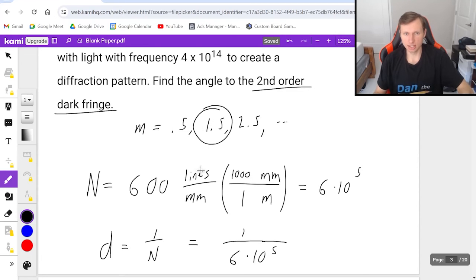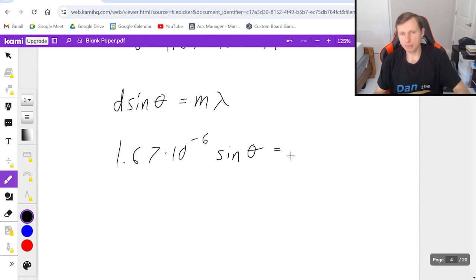And if I want the second order dark fringe, I need to use the second dark fringe, which is 1.5. And if it was the first order, it would have been 0.5. And if it was the third order, it would have been 2.5, etc. So in other words, m is 1.5.